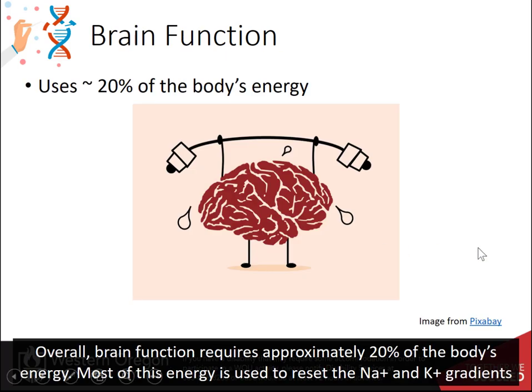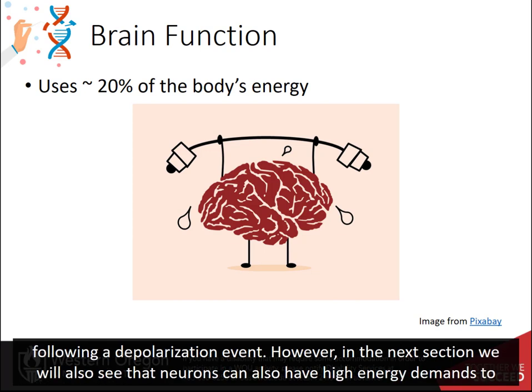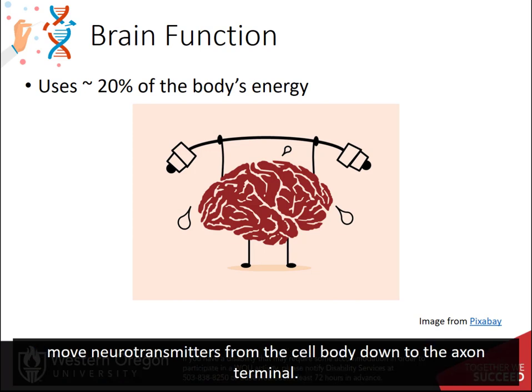Overall, brain function requires approximately 20% of the body's energy. Most of this energy is used to reset the sodium and potassium gradients following a depolarization event. However, in the next section, we will also see that neurons can have a high energy demand to move neurotransmitters from the cell body down to the axon terminal.